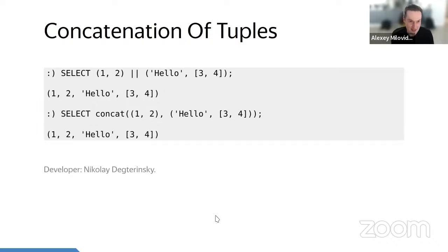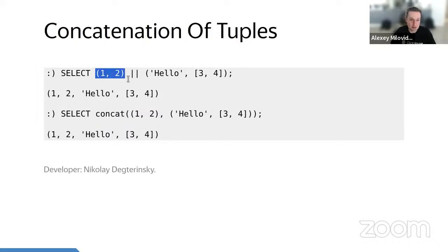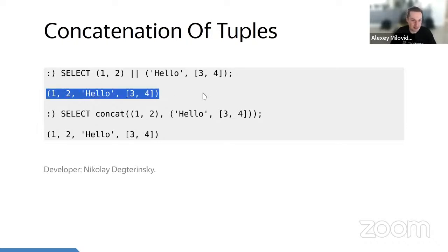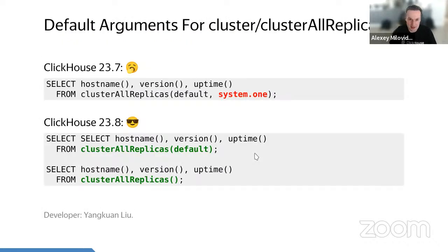What is quite similar, and I'm not sure if it's useful, is concatenation of tuples. We have the concatenation operator and a concat function — you can concatenate strings, but now you can also concatenate tuples. It will just take two tuples with two elements each and give you one tuple of four elements. Nice. Do you need it? I'm not sure.